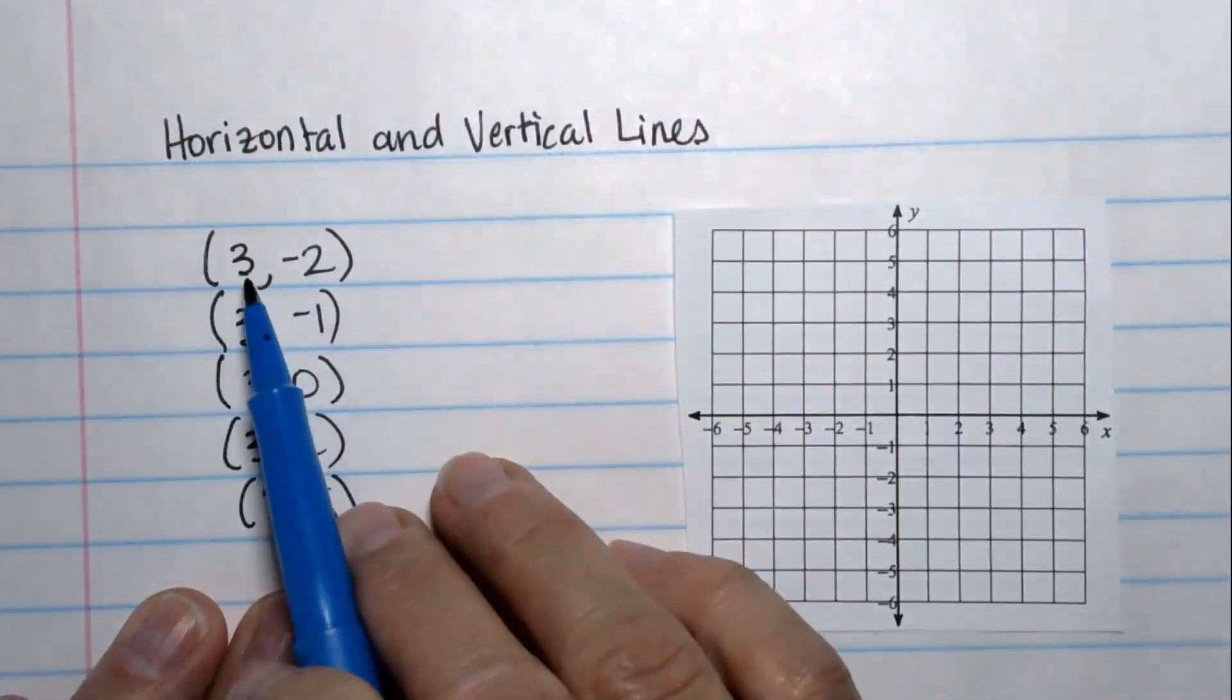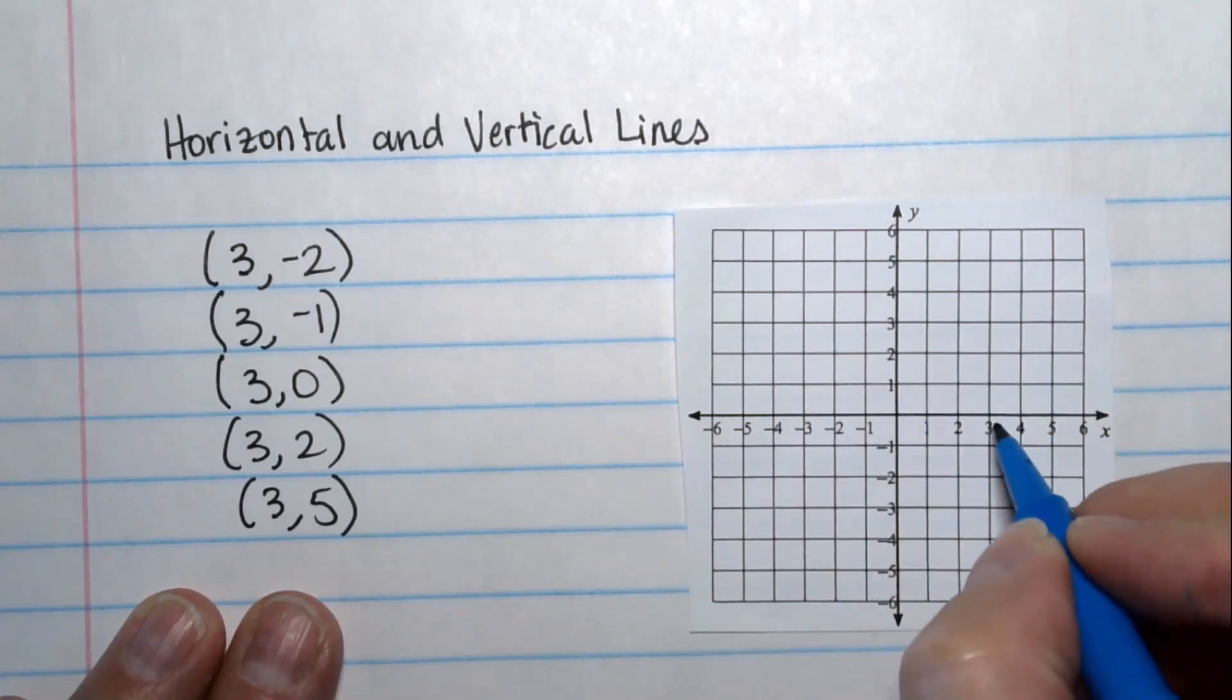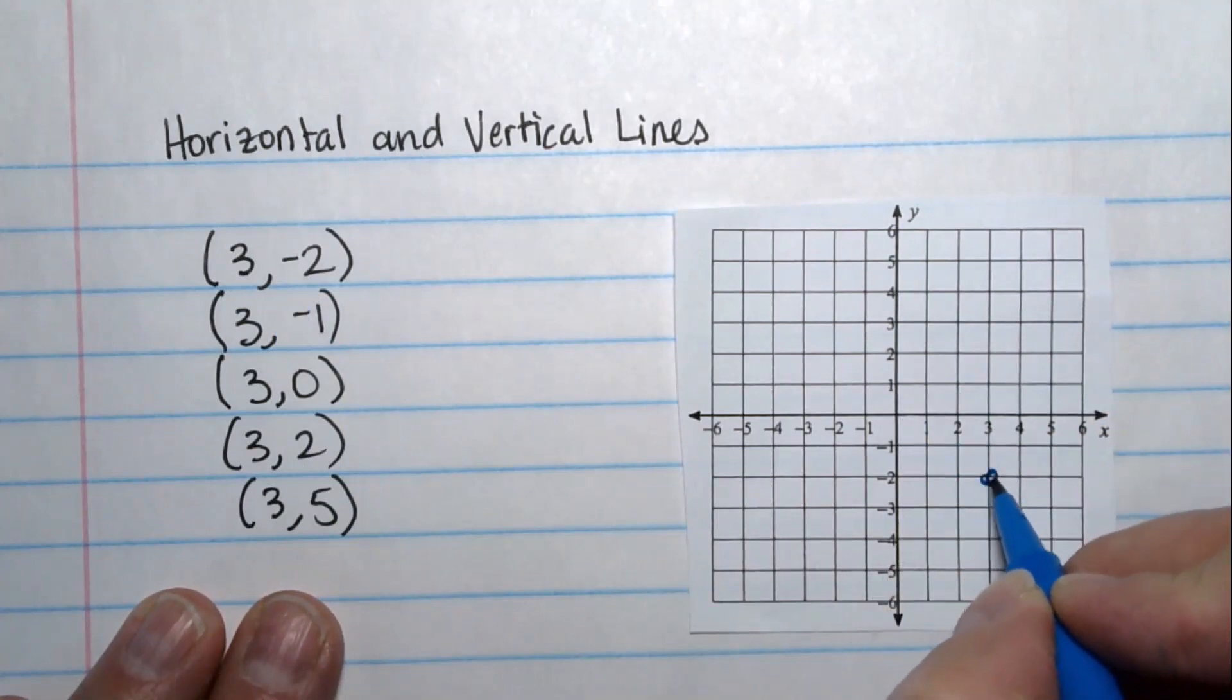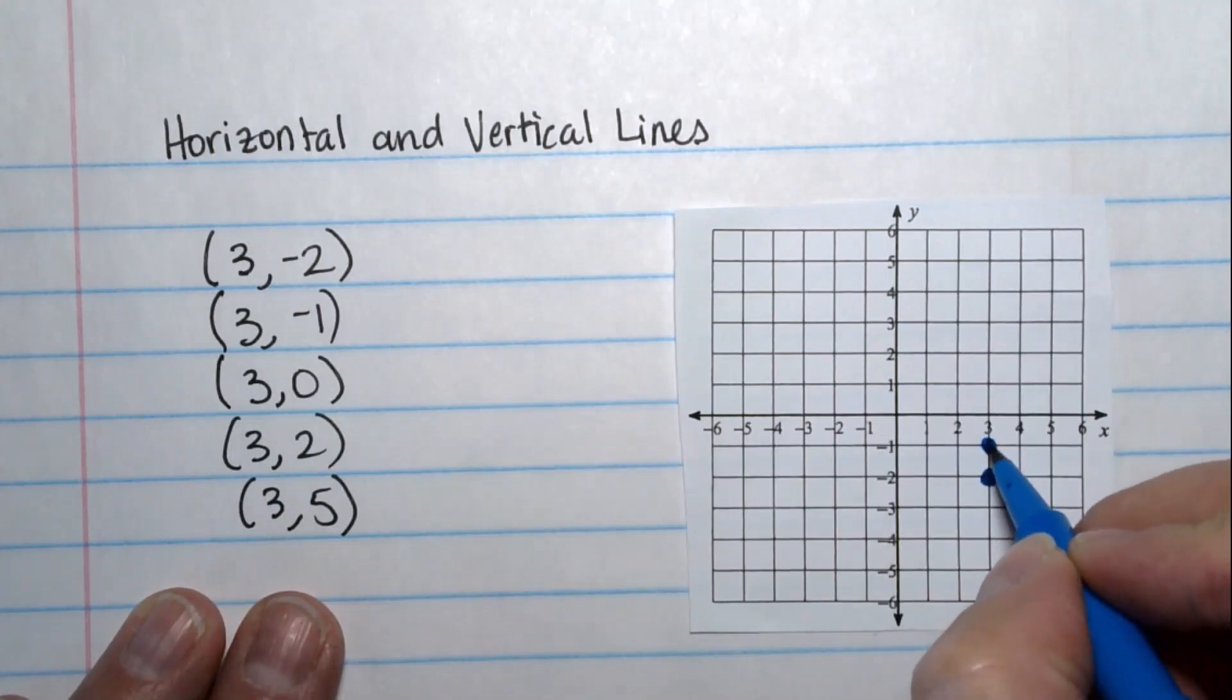3 is negative 2, so x equals 3, y equals negative 2. 3, negative 1 would be 3, negative 1 here. 3, 0, that's an x-intercept.